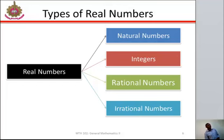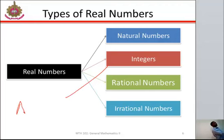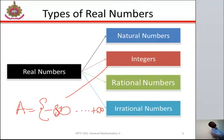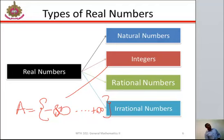Another set is integers. Integers are a set of positive and negative whole numbers ranging from minus infinity to plus infinity — from minus 1, minus 2, minus 3, to 1, 2, 3, and so on to infinity.